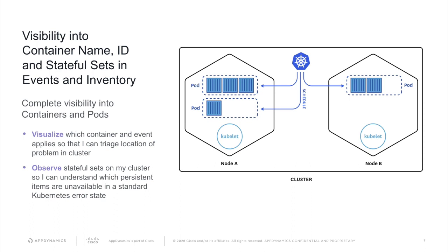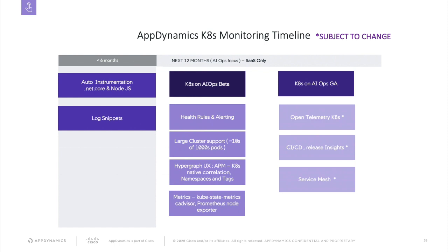Now that we've covered what the Kubernetes cluster agent offers today and what's coming next, here's a broader look at our roadmap over the next 12 months. We're working on log snippets, which will enable you to plug your log monitoring option into our cluster agent. We're also continuing to expand support for a large number of pods — upwards of thousands of pods. We have a new cloud native visualization UX to correlate APM and Kubernetes namespaces and tags, and we're working on open telemetry efforts alongside Kubernetes, including CI/CD, releasing additional insights, and service mesh.